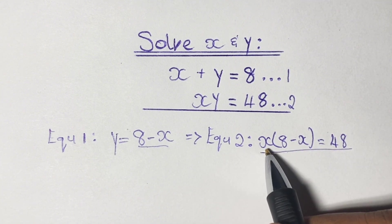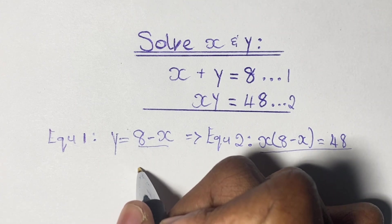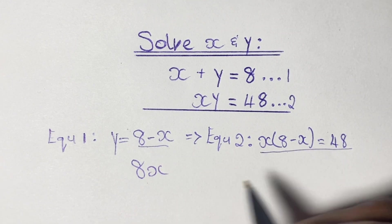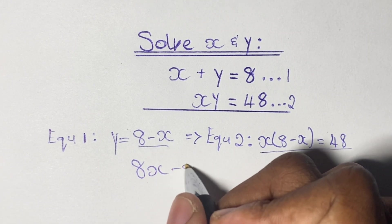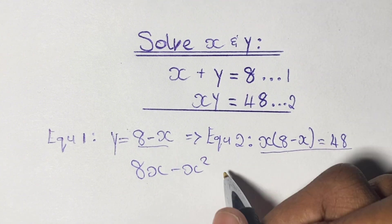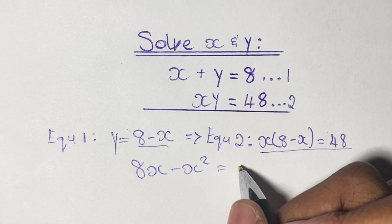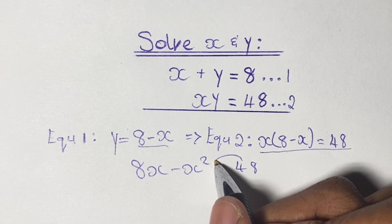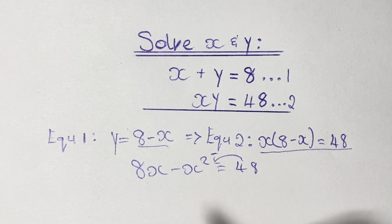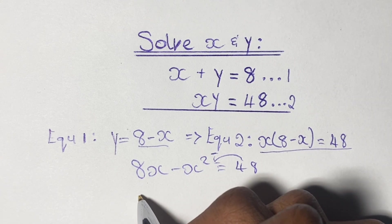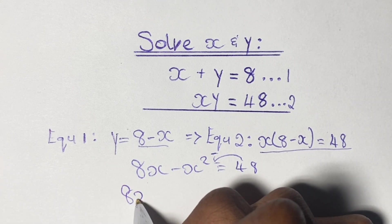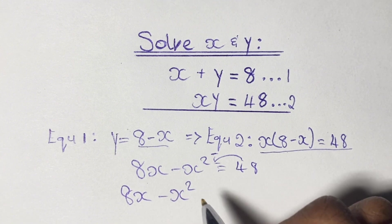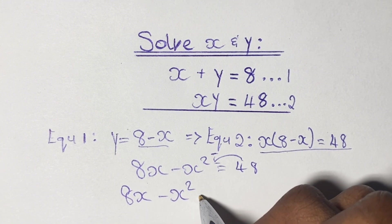We start by expanding our brackets. So we would have x times 8, which gives us 8x, and x times negative x, which gives us negative x squared, equal to 48. Then we bring the 48 over to the left-hand side of the equation, so we have 8x minus x squared minus 48 is equal to 0.